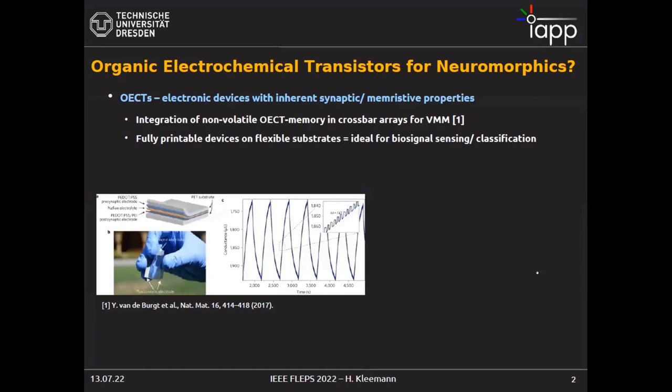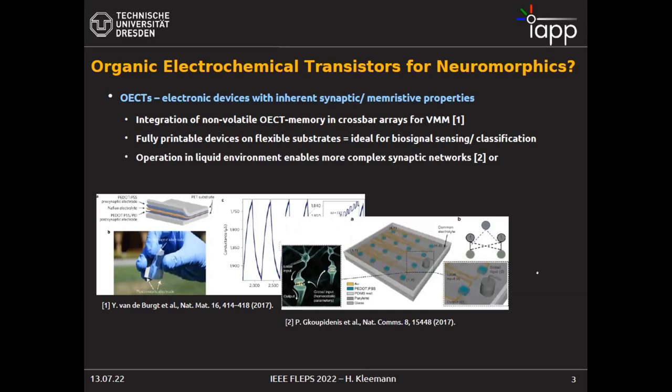There's a lot of work going on at the moment where people are trying to use OECTs for edge computing applications. We have used organic memories integrated into passive matrix arrays to carry out vector-matrix multiplication on a flexible substrate. These can tune the connections between individual nodes in a network quite precisely, which is exactly what you need to carry out vector-matrix multiplication.